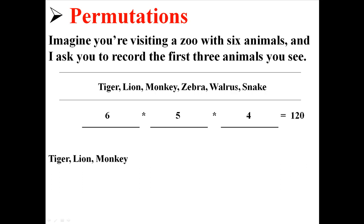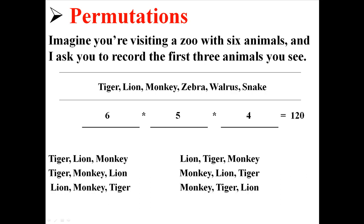You can see something like tiger, lion, and monkey. Or you could see tiger, monkey, and lion. Or lion, monkey, and tiger. Realize that there are multiple ways of seeing the same three animals.